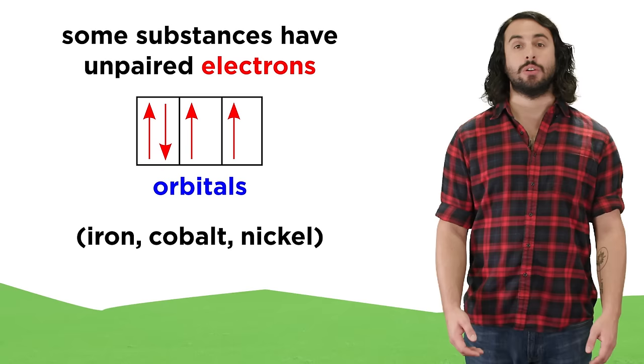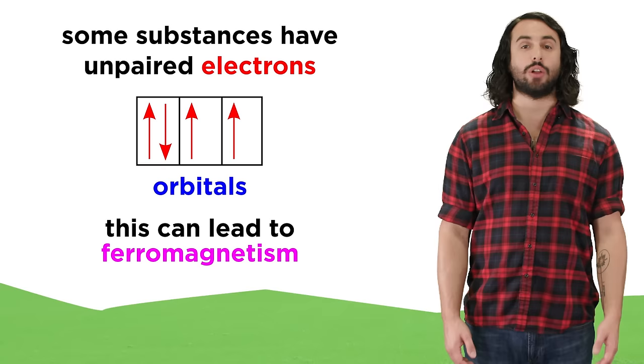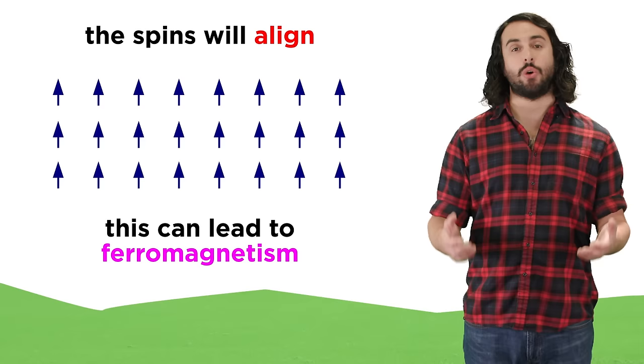But some substances like iron, cobalt, and nickel have electrons that aren't canceled out, and some of these can be called ferromagnetic.